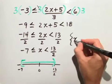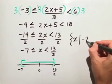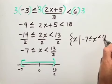The set builder notation will be the set of all x such that negative 7 is less than or equal to x is less than 13 halves.